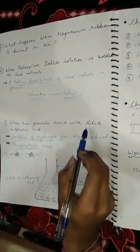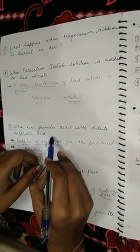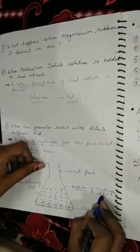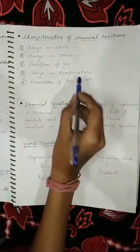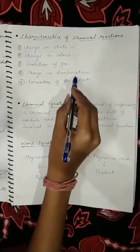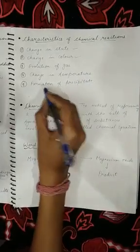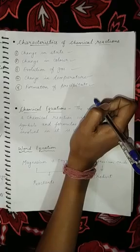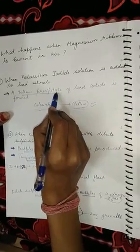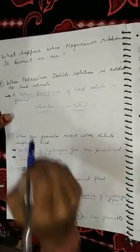Third is evolution of gas — in the activity with zinc granules and dilute sulfuric acid, we saw bubbles of hydrogen gas being formed, so we see that evolution of gas takes place. Fourth is change in temperature — in the same activity, we observed that the temperature was changing.